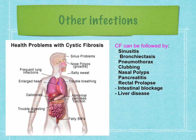Bronchiectasis is a lung disease where the bronchial tubes are flabby and form pockets from excess mucus, creating a place for bacteria to grow and leading to serious lung infections. Pneumothorax is a collapsed lung. Clubbing or enlargement of the fingertips or toes, nasal polyps which are growths in the nose, pancreatitis or inflammation of the pancreas, rectal prolapse, intestinal blockage, and liver disease are also associated complications.